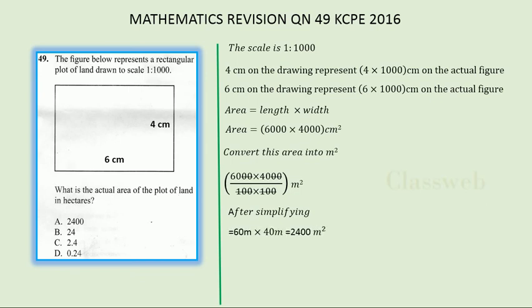Multiplying 60 meters by 40 meters gives 2,400 meters squared. Since one hectare equals 10,000 meters squared, the area of 2,400 meters squared is converted by dividing by 10,000, giving a final answer of 0.24 hectares.